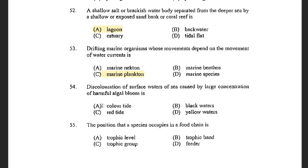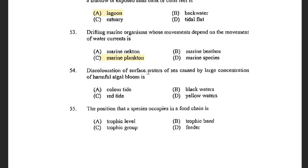Next question: Discolouration of surface water of the sea caused by a large concentration of harmful algal bloom is — options are Colour Tide, Black Water, Red Tide, and Yellow Water. The answer is Colour Tide. Discolouration of water is also known as Colour Tide.